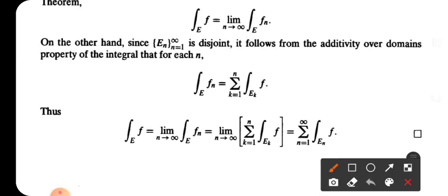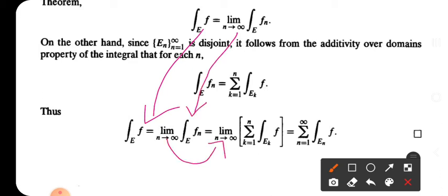The integral of F_n over E, which equals the limit as n tends to infinity of the integral of F_n over E, which equals the limit as n tends to infinity of sigma from k equal to 1 to n of the integral of F over E_k. Then as the limit tends to infinity, the summation equals sigma from n equal to 1 to infinity of the integral of F over E_n. So we have proved the result.